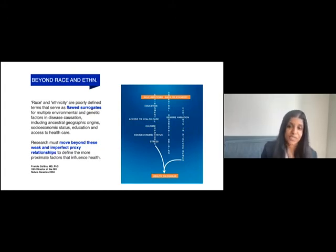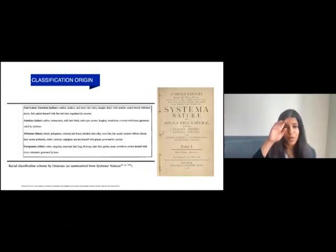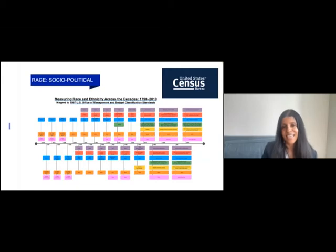Early classification systems around race reflected this mechanism through which racism was perpetuated. This is from Systema Naturae and shows extreme subjectivity and bias, an explicit ordering which placed Black individuals and other racial minorities at the bottom of this socio-political hierarchy and white individuals at the top.